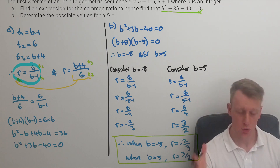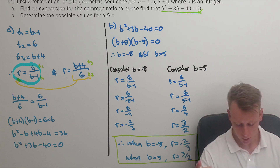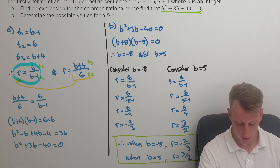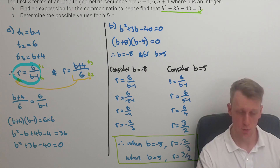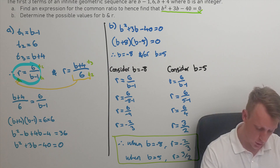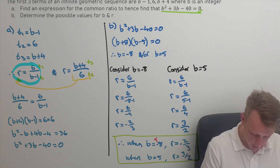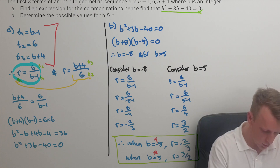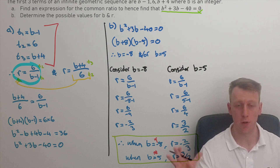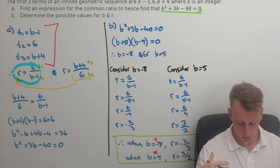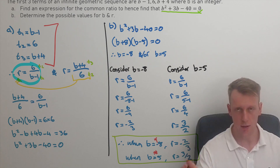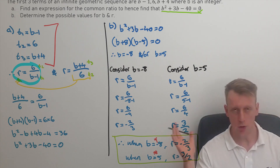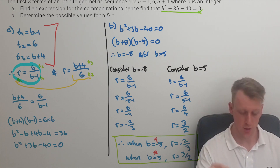To solve the quadratic from part A, we can find solutions for R given the two different values we get for B. You can substitute those values of B back into the first three terms to verify the ratio is correct. Now we're going to move on to a more complex familiar geometric sequences question.